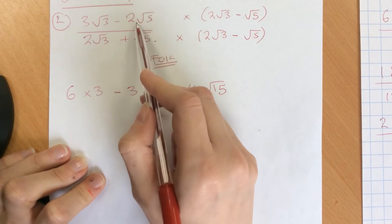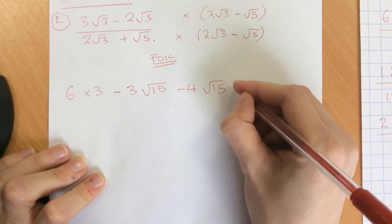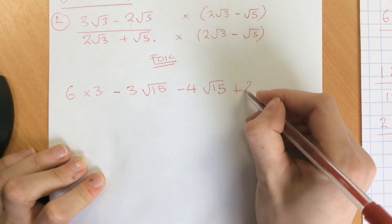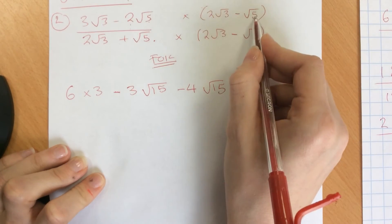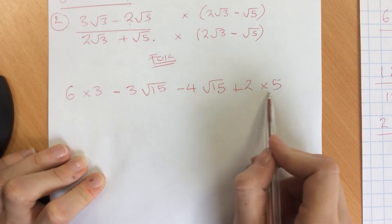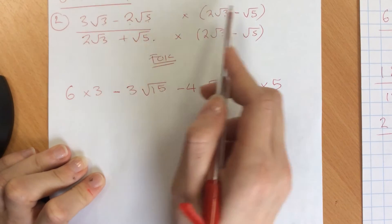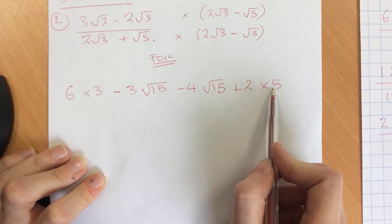Then we're going to do last, so minus 2 root 5 times minus root 5. Minus and a minus gives us a plus 2. Root 5 times root 5 cancels and gives us just 5. So don't forget these bits, the bits that people forget. So 2 and then root 5 times root 5 gives us 5.